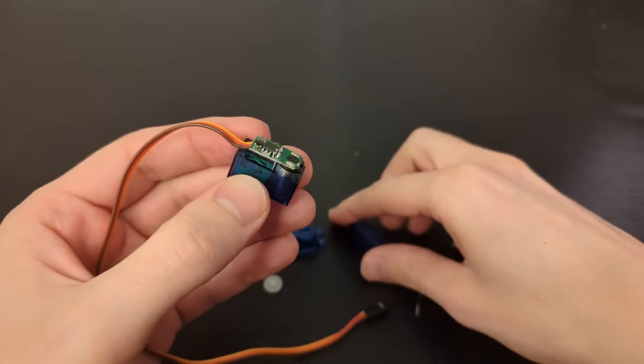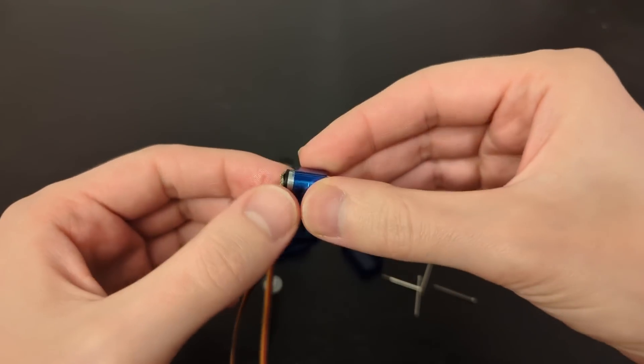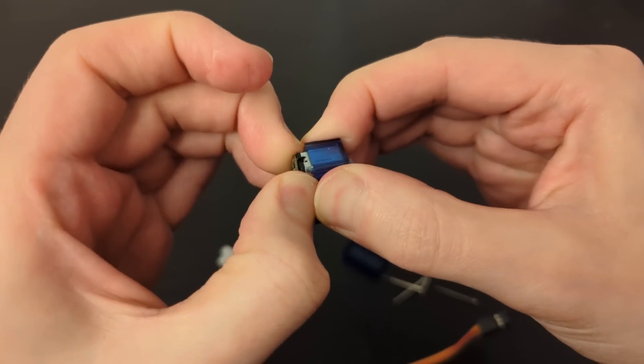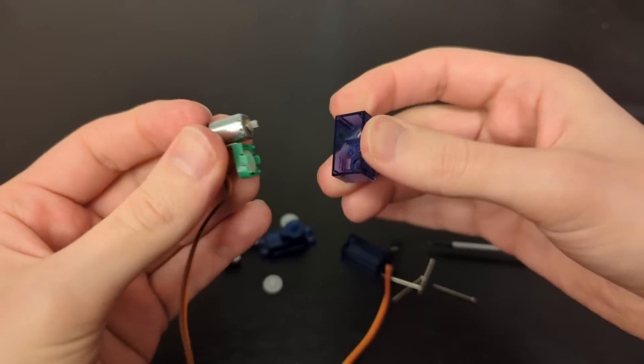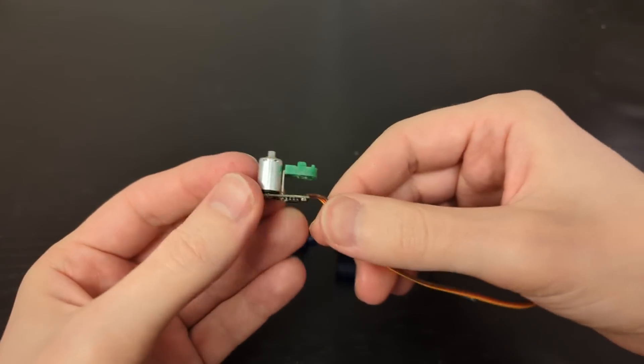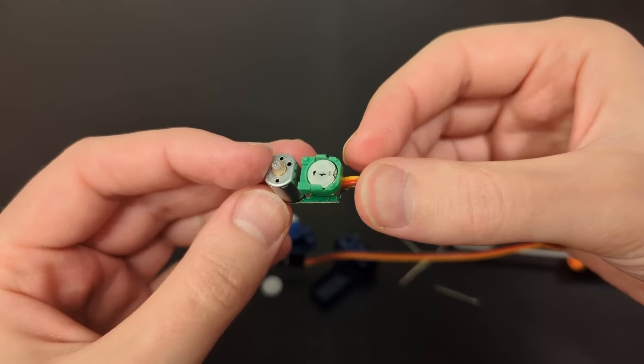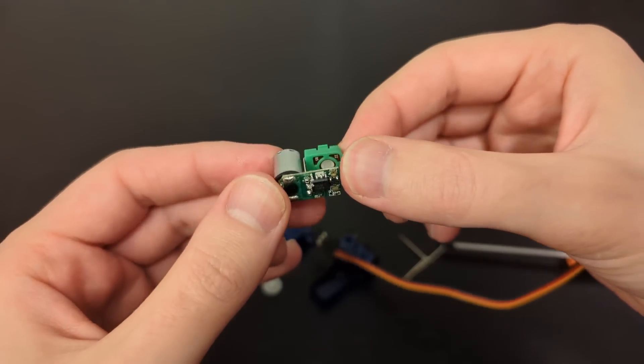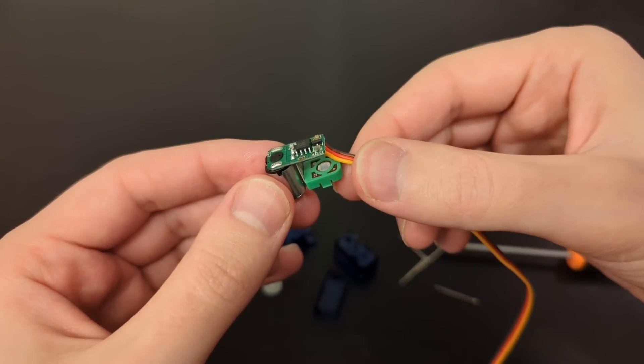Let's first take apart this small servo motor and see how it works. You can see here a small electric motor. This light green plastic part is a variable resistor used as a position sensor. Everything is mounted on the control board.